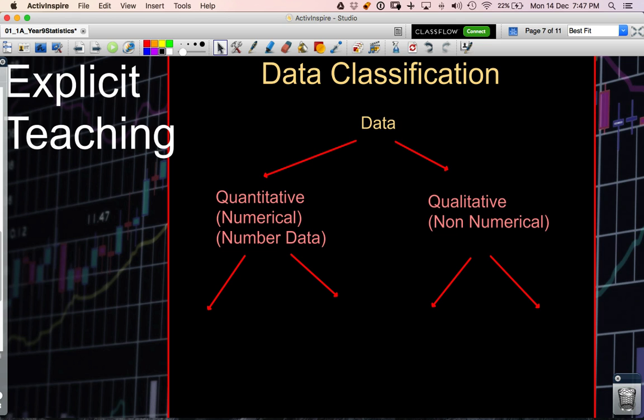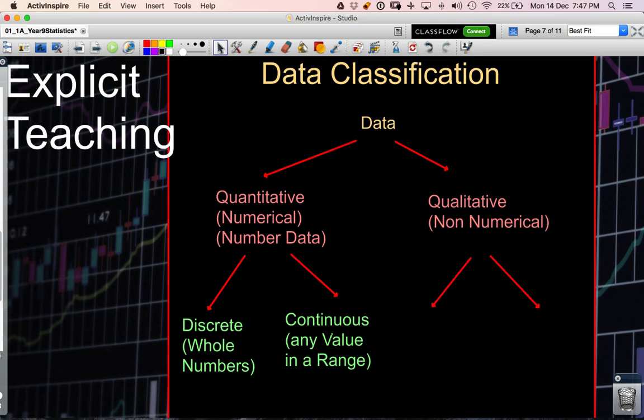Quantitative or numerical data can be considered to be either discrete where we consider data with just whole numbers or continuous where our data can be any value or considered to be any value in a range.